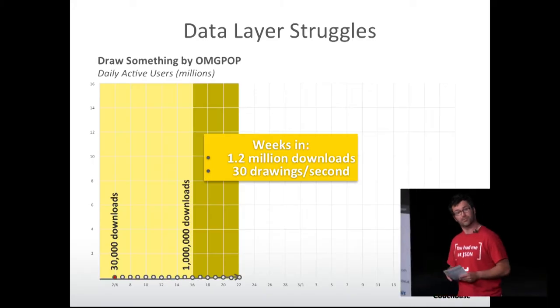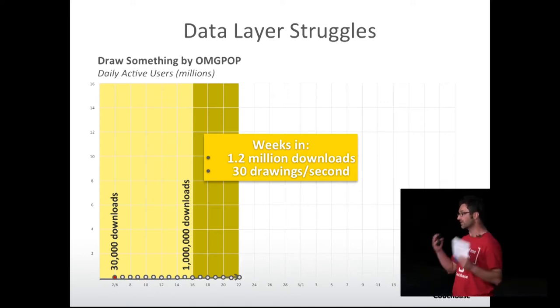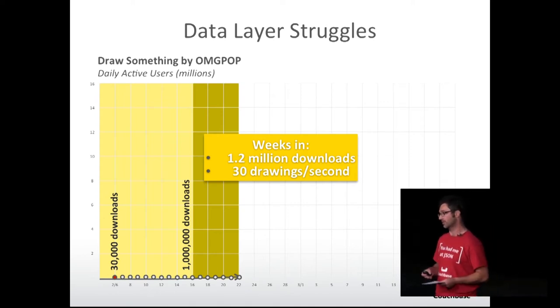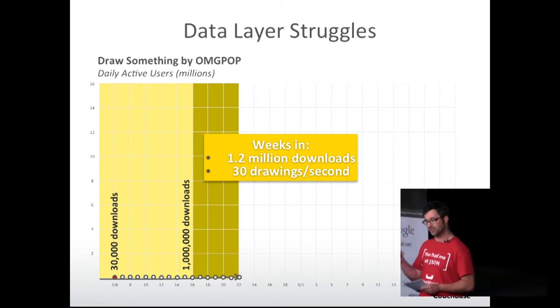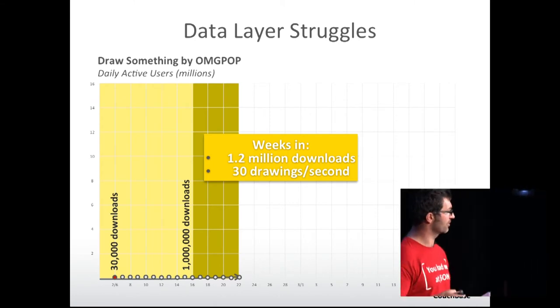A few weeks later, they had 1.2 million users, and the issue was they had many pictures coming into their database — 30 drawings a second. They started to have performance issues, not on the middleware this time, but inside the key-value storage they had chosen.